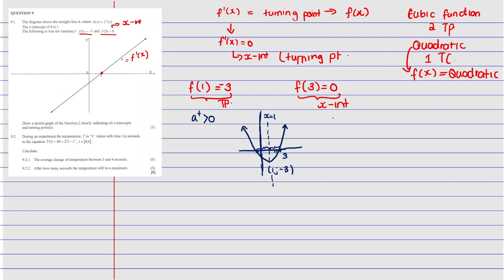The distance from the axis of symmetry x = 1 to the known x-intercept at x = 3 is 3 - 1 = 2 units. Reflecting this distance to the left: 1 - 2 = -1. So the other x-intercept is at x = -1. The sketch shows x-intercepts at (-1, 0) and (3, 0), with turning point at (1, -3).